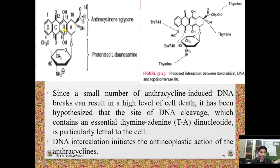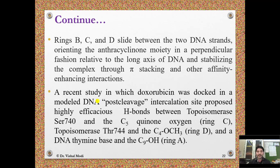The anthracyclinone aglycone has rings A, B, C, and D — it is also called a tetracycline-type molecule — with the glycone moiety attached at the A ring. A small number of anthracycline-induced DNA breaks can result in a high level of cell death; it is hypothesized that the site of DNA cleavage containing an essential thymine-adenine dinucleotide is particularly lethal. DNA intercalation initiates antineoplastic action: rings B, C, and D slide between the two DNA strands, orienting the anthracyclinone moiety perpendicular to the long axis of DNA, stabilized through pi-stacking interactions.